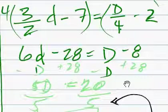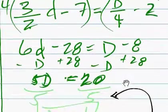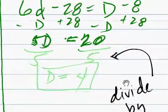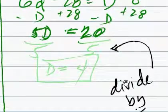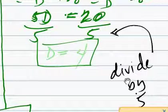And we can subtract the d from this side, and subtract the d from that side, giving us 5d, and we'll add 28 to this side, add 28 to that side, giving us 20. Now, 5d equals 20. We can do that one in our head. Divide by 5 on both sides, gives us d equals 4.